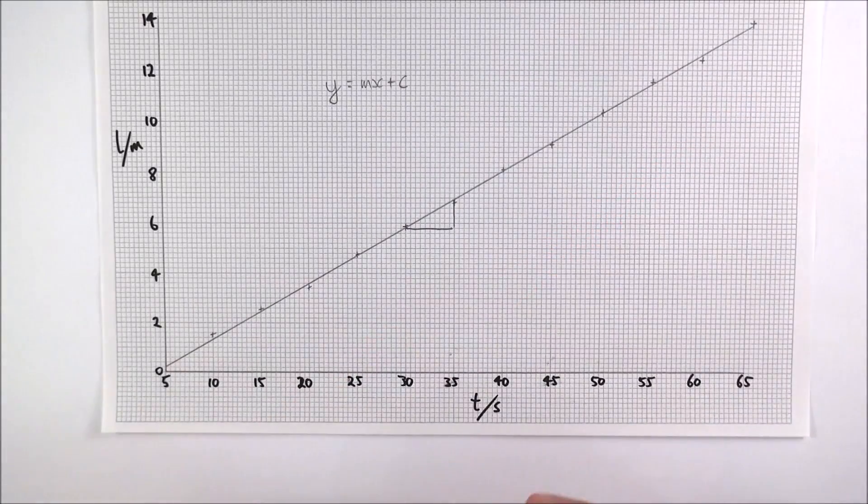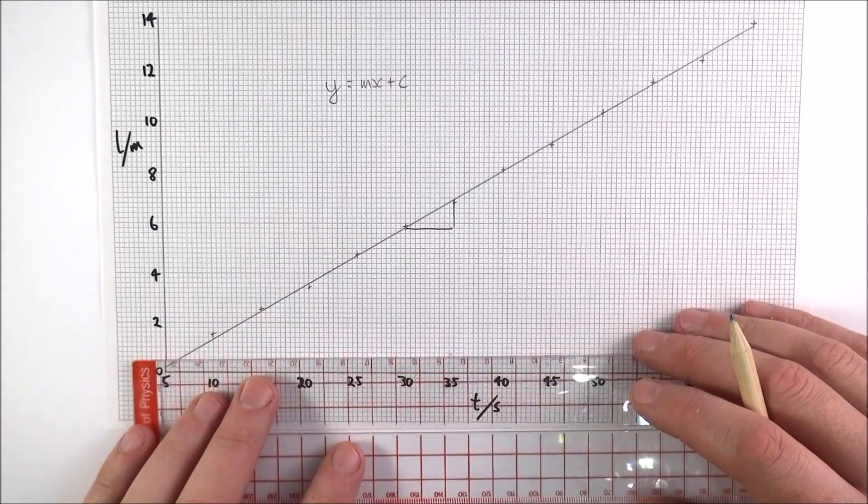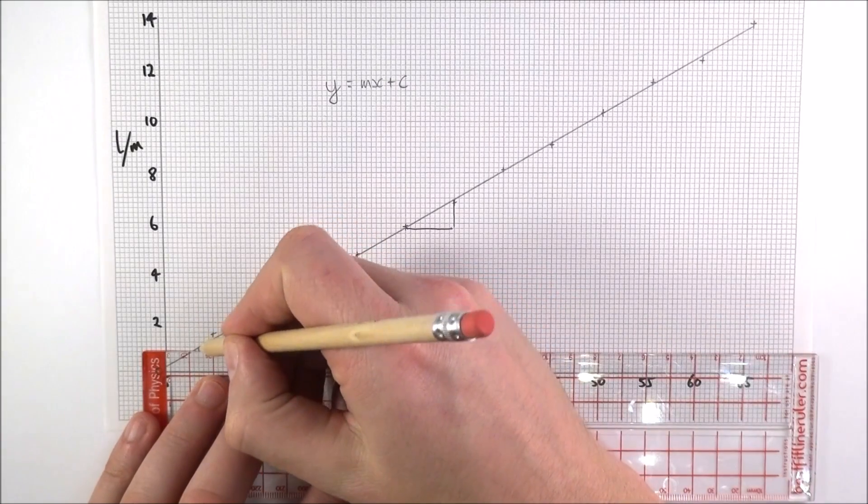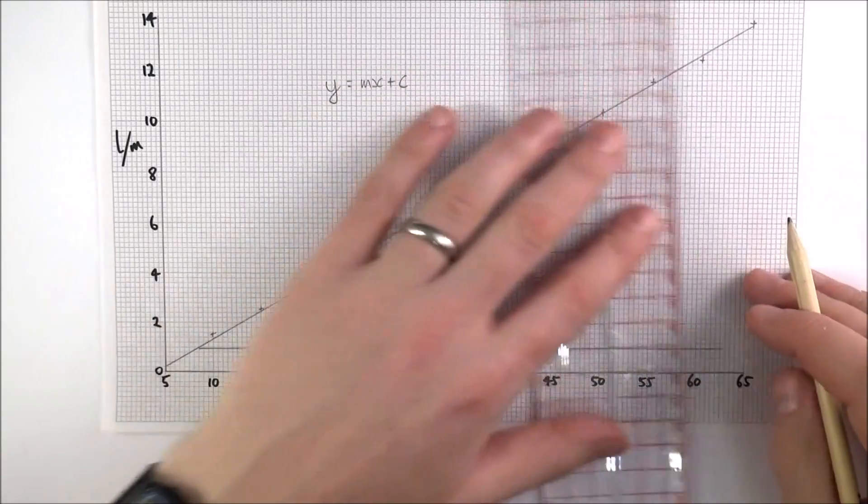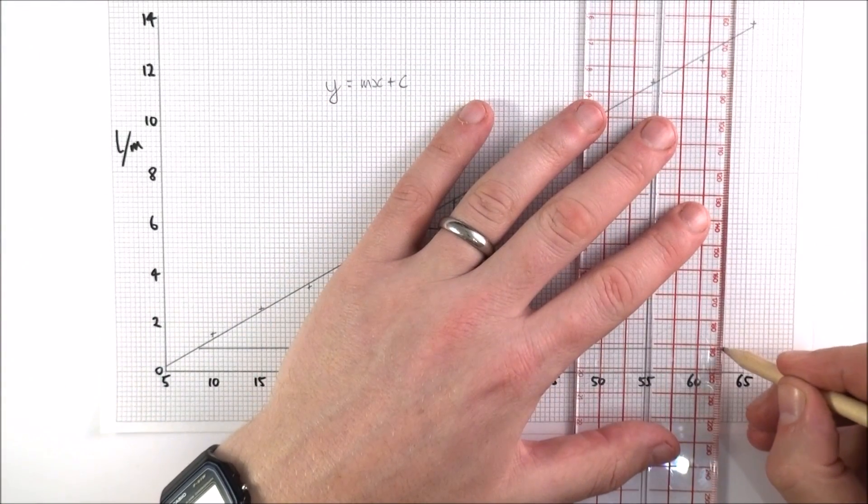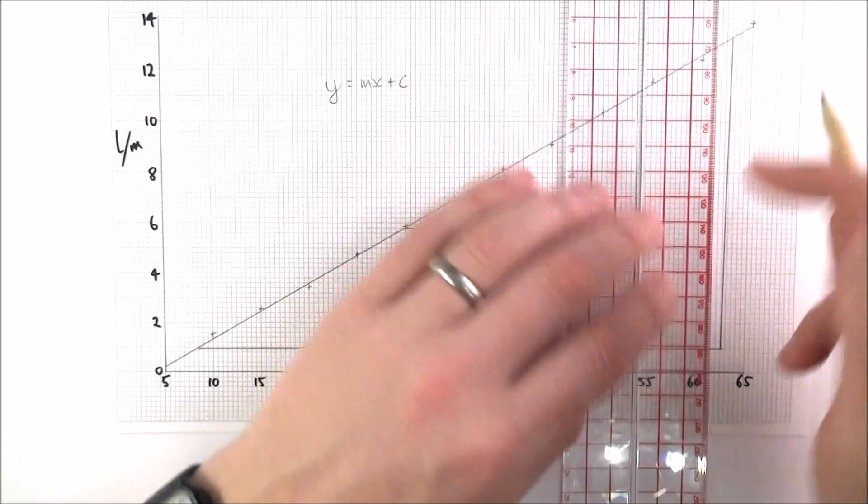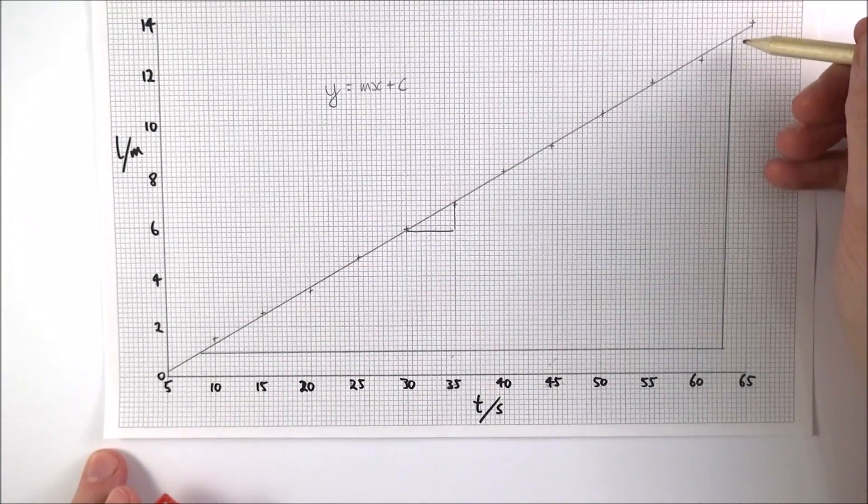What you want to think about is taking a very large section of data. So I'm going to draw this line along here. I'm just going to go up to the line of best fit. Now the important thing is I'm not drawing to a data point, what I'm doing is I'm drawing up to where my line of best fit is.